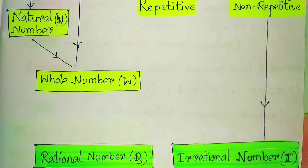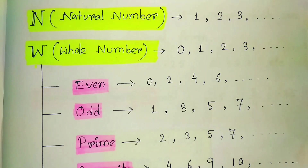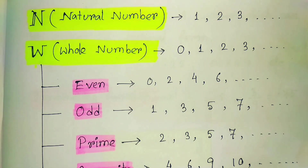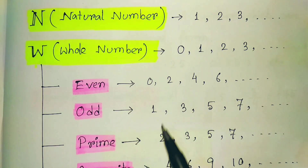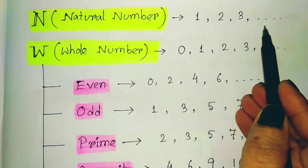Let me explain how rational and irrational numbers are formed. If I ask you to tell me some numbers, you would initially say 1, 2, 3, 4 — these are the natural numbers, going up to infinity. Zero is not included in natural numbers.